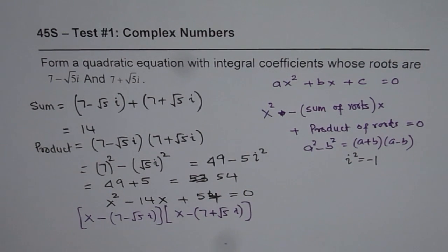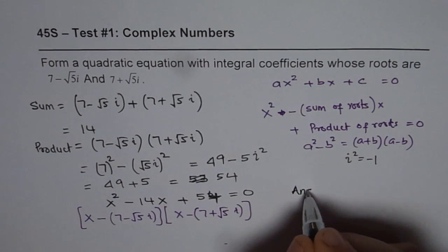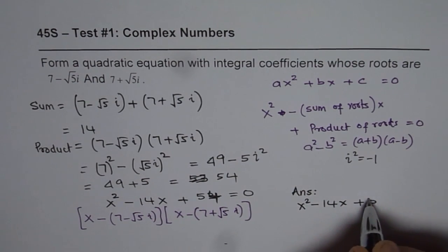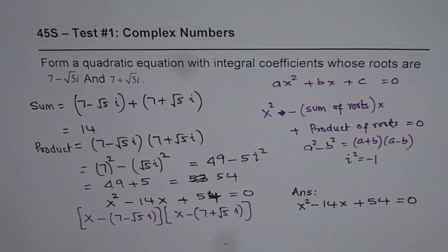And let me clearly write down my answer now. So the answer here is x square minus 14x plus 54 equals to 0. I hope that helps. Thank you.